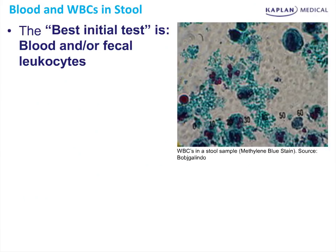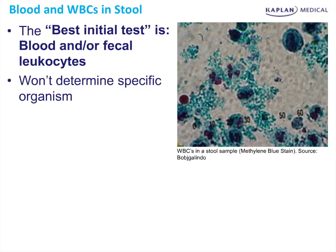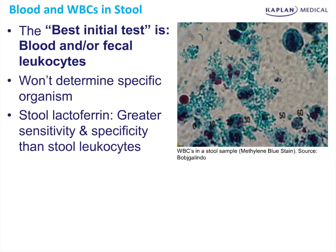The best initial test is blood or fecal leukocytes. If they don't tell you there's blood in the stool, look for occult blood with the stool or do fecal leukocytes. It won't determine a specific organism, but it will tell you that you're in the Salmonella, Shigella, Yersinia, E. coli, Vibrio vulnificus, Vibrio parahemolyticus, or Campylobacter group.